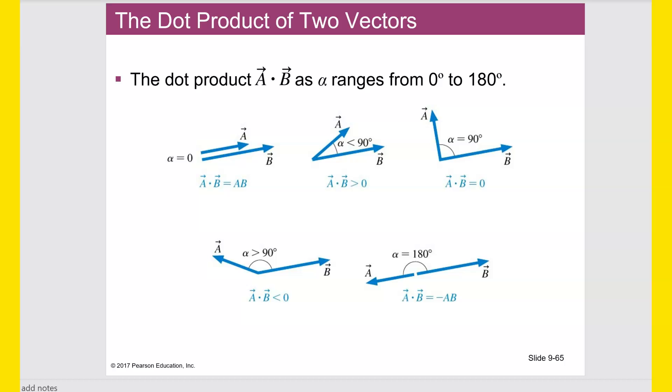Okay, so here's just some examples of different results of dot products that we can expect. If the two, if the force and the displacement vectors point in the same exact direction, then this A dot B is just going to be the same thing as A times B, which is what I said earlier.